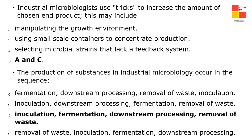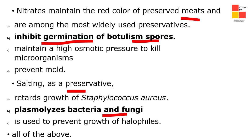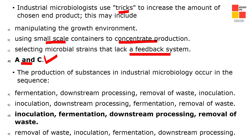Industrial microbiologists use tricks to increase the amount of the chosen end product. This may include using small-scale containers to consider trade production and selecting microbial strains that lack a feedback system — A and C is the right option. Manipulating the growth environment and selecting microbial strains that lack a feedback system — B and C is also a right option.